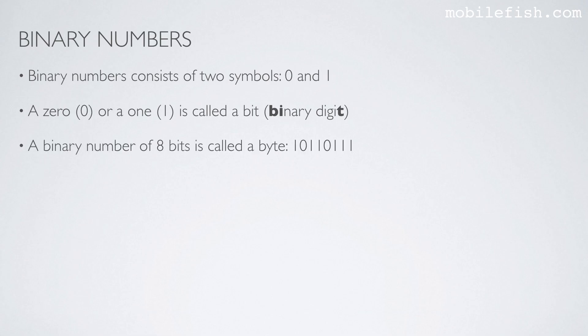A binary number of 8 bits is called a byte. As you can see over here, this is a byte, consists of 8 bits. Two bytes has 16 bits, three bytes has 24 bits, etc. Binary numbers are used mainly in computers.